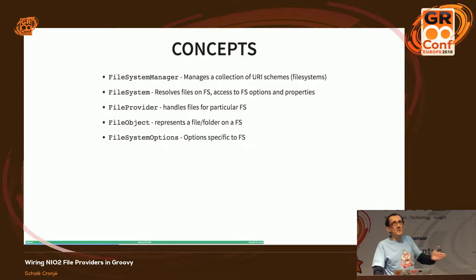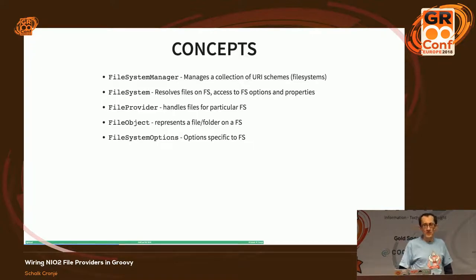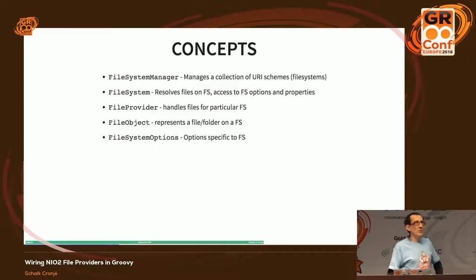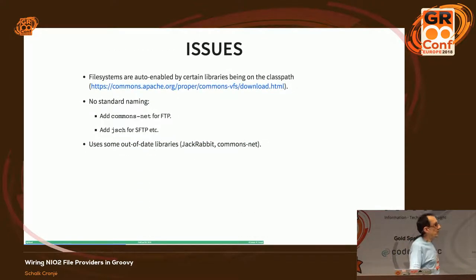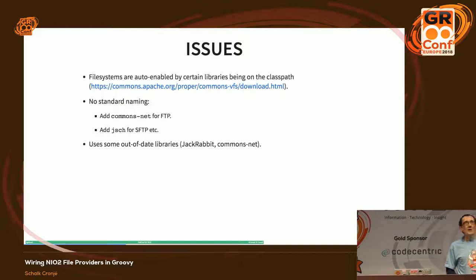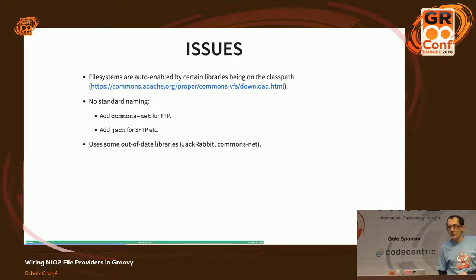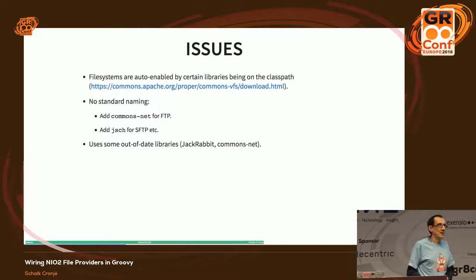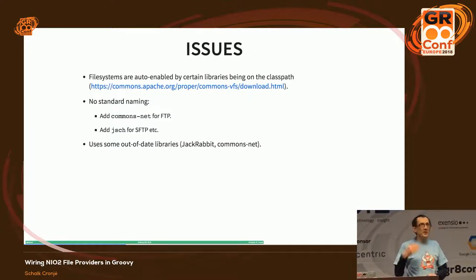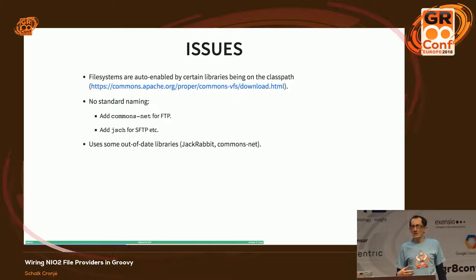Commons VFS has useful concepts that carry over to Java NIO2 as well: a file system manager, file systems, providers, and file objects. But the problem with Apache is there's no standard naming — you have to guess which third-party libraries to use, and it changes behavior depending on which ones you drop on the classpath. For instance, if you drop JSCH on the classpath, you suddenly get SFTP support, but it's not obvious and easy to forget.